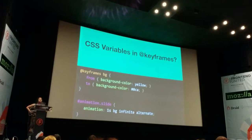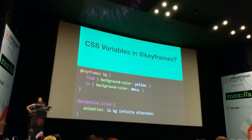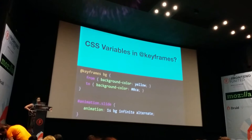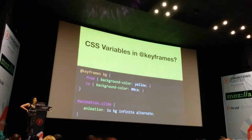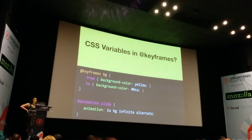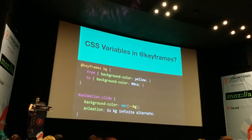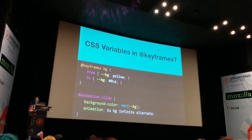How many of you have used CSS animations? Here I have a very simple animation that goes from yellow to blue infinitely. You might think: I could use variables in animations — that would be cool! So I try to set `background-color` to a CSS variable and define it. But you can already see I'm breaking my animation — there's no smooth animation anymore, it just flips from blue to yellow.